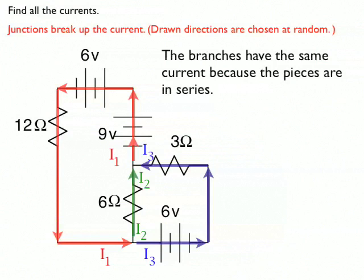On the branch on the right in blue, that I3, that's got a 6-volt battery and a 3-ohm resistor. Because they're in series, they all have the same current.